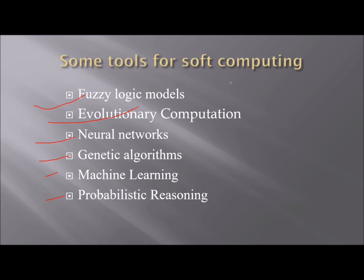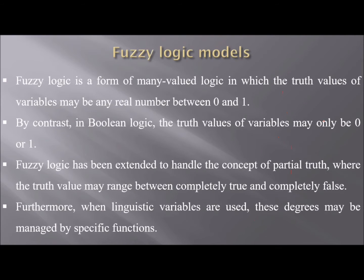There are various components and forms of soft computing — these are very highly used in various fields. Let us start with fuzzy logic. Fuzzy logic is actually a form of many-valued logic in which the truth values of variables may be any real number between 0 and 1, not just 0 or 1, but anywhere between 0 and 1, including 0 and 1.